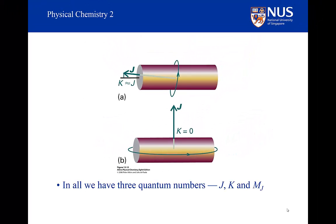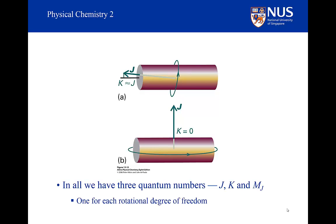So in this case, we have three quantum numbers arising for a symmetric top: J, K, and MJ. They arise because we are solving boundary conditions associated with each degree of freedom of the molecule.